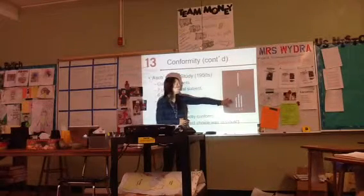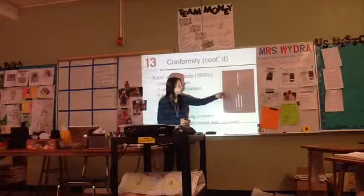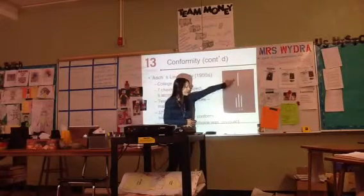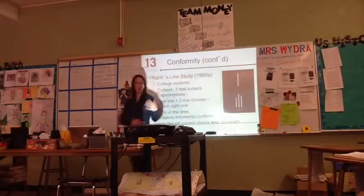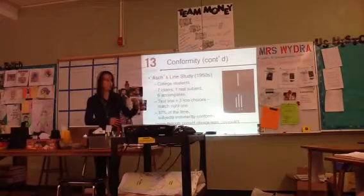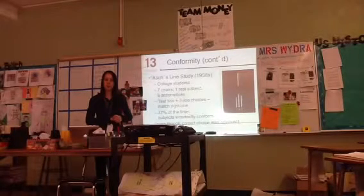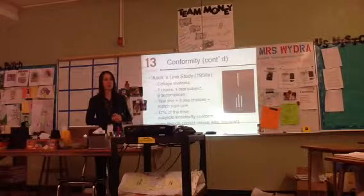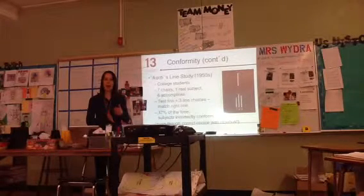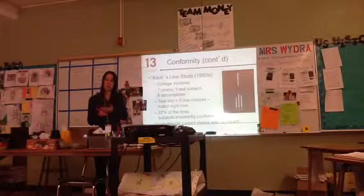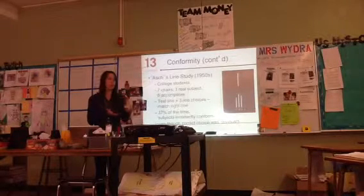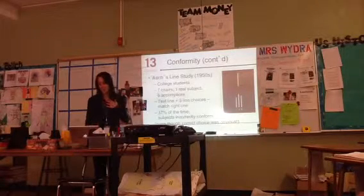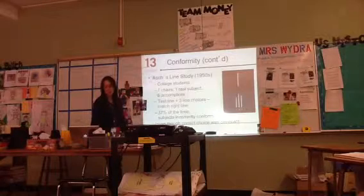There were a group of people, all confederates except one subject. They were asked to compare lines — shown an original line and three options, and asked which one matches perfectly. The other six lied and said 'it's line number one,' even though it was clearly line number two. When they got to the subject, he said number one too. It didn't happen every time, but it happened enough — 37% of the time — for Asch to conclude that conformity was taking place.